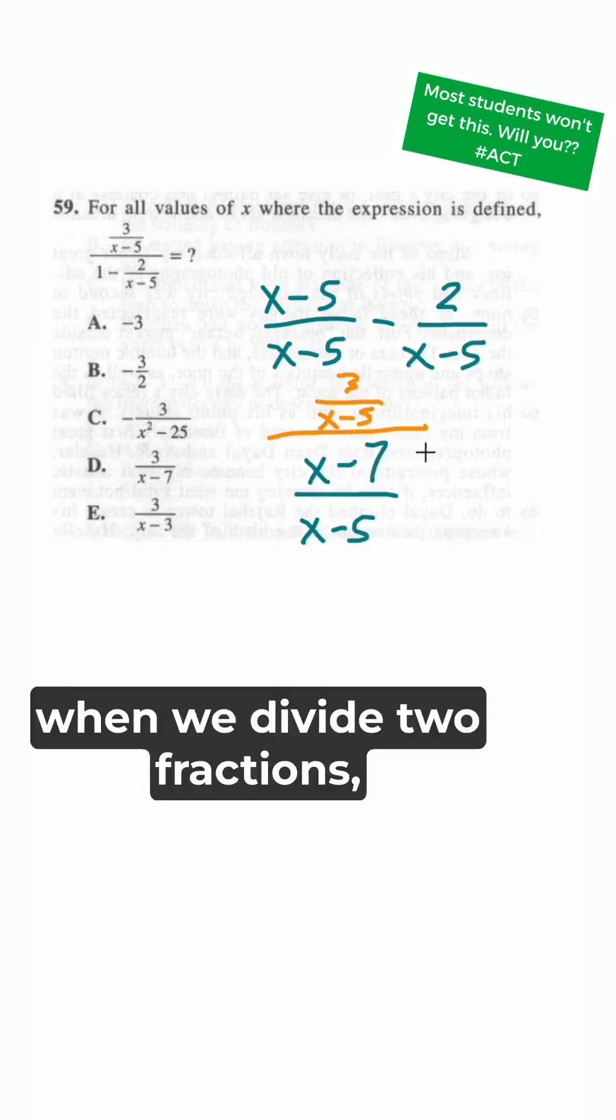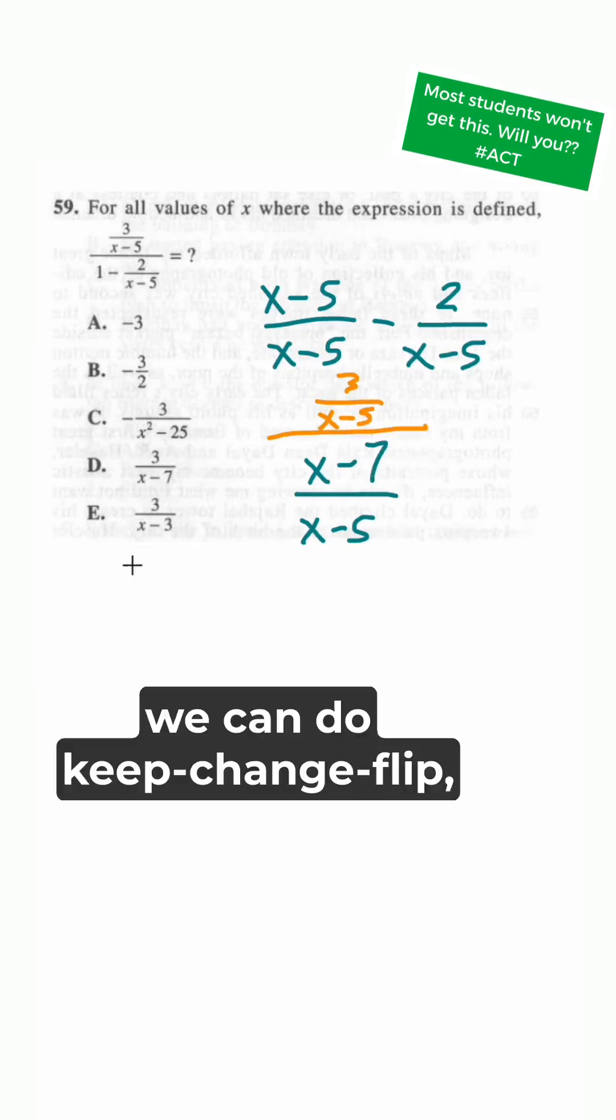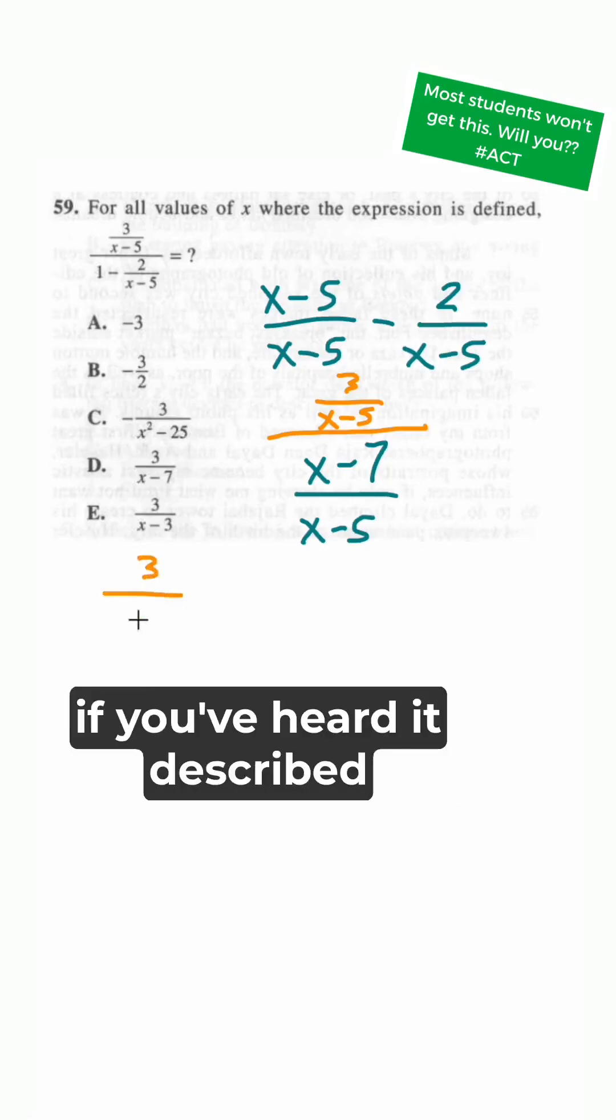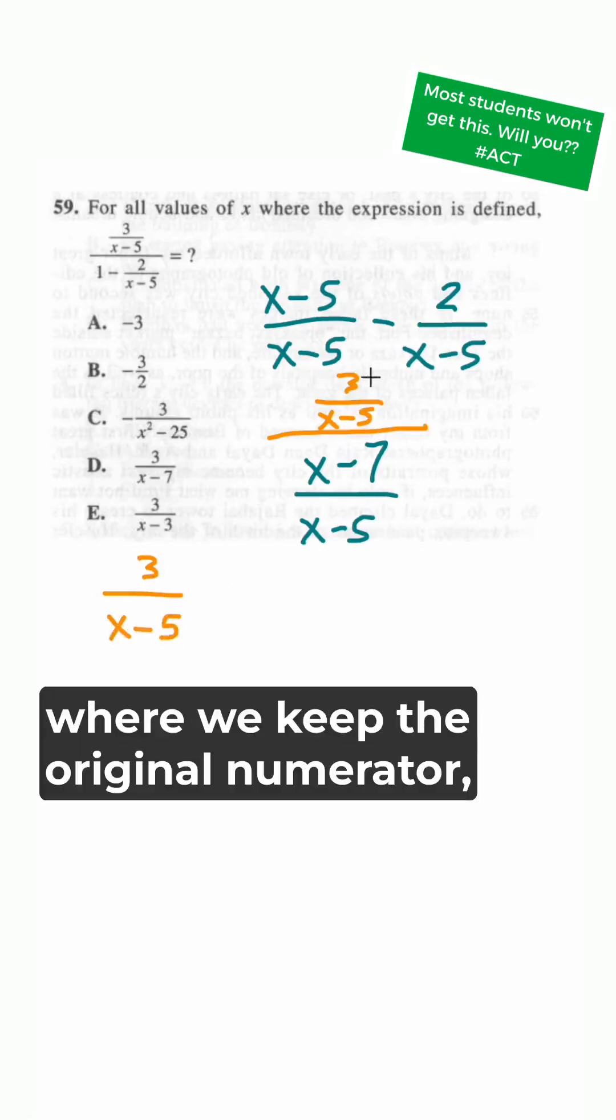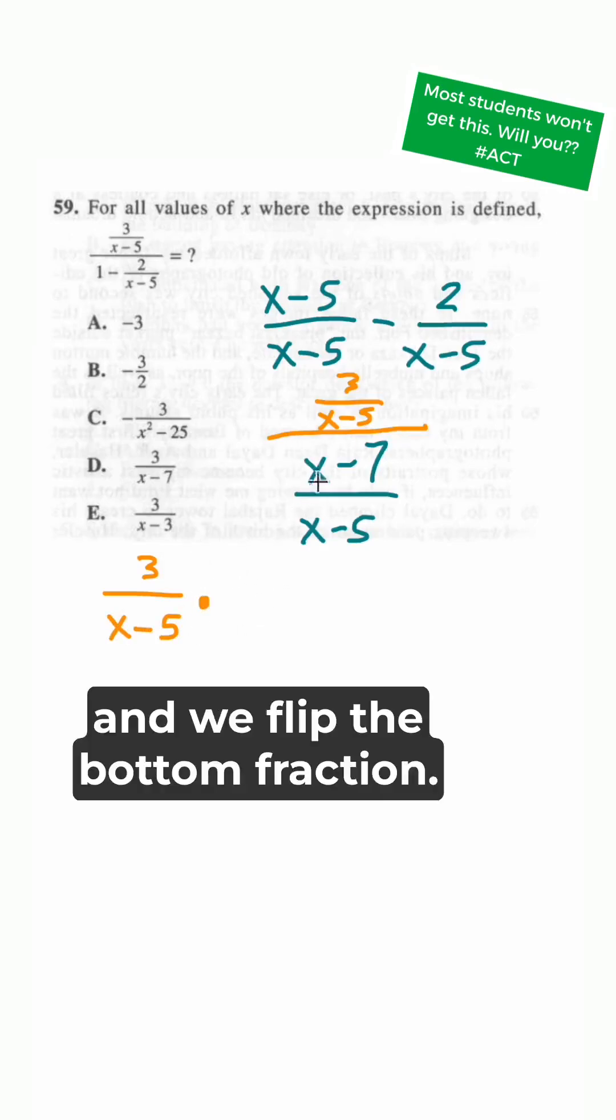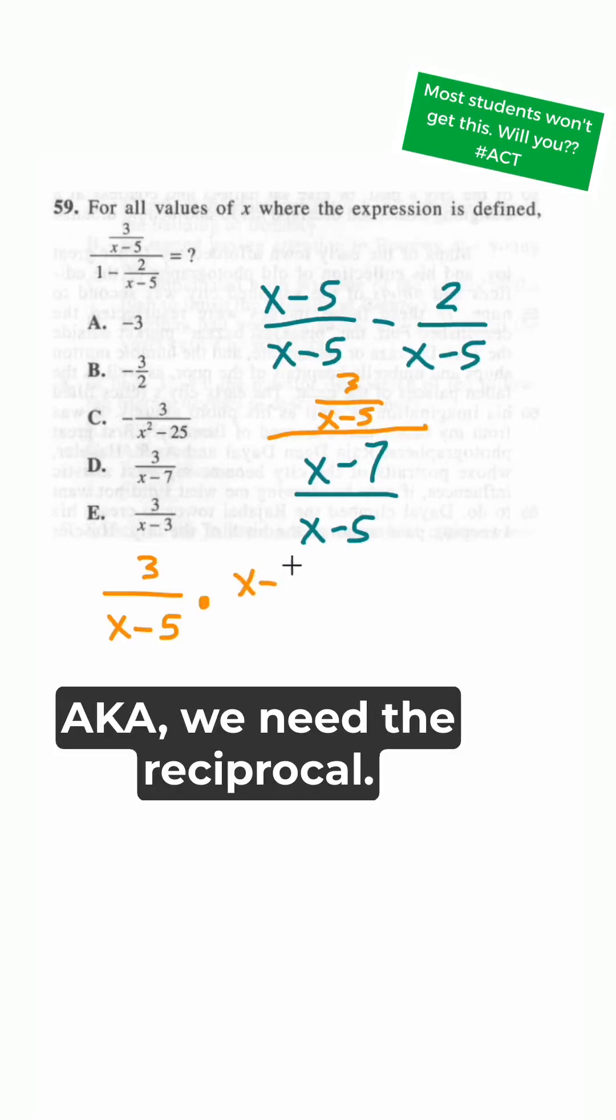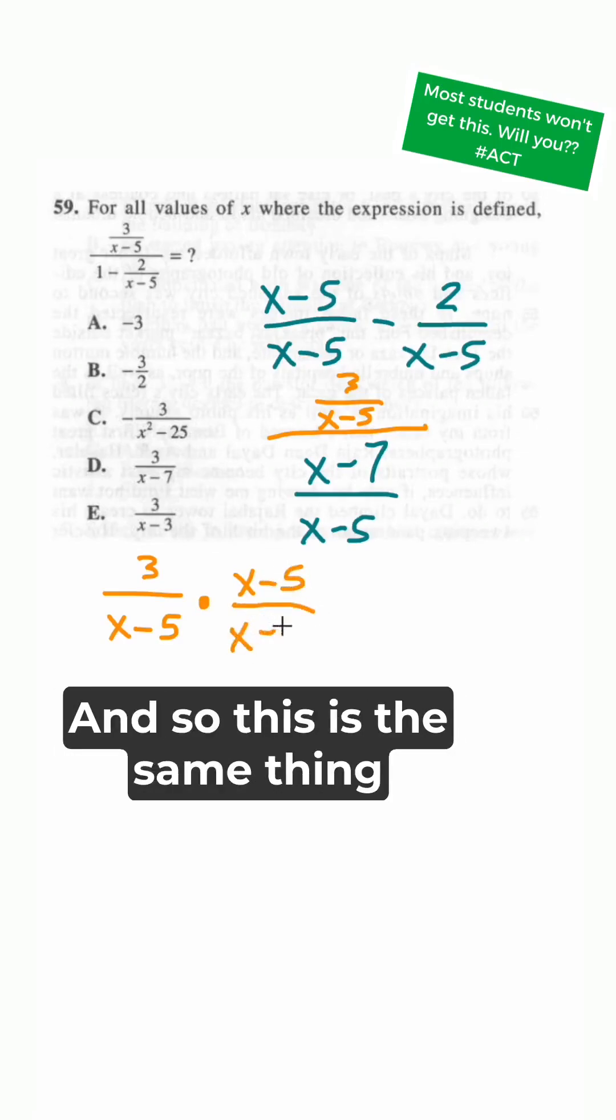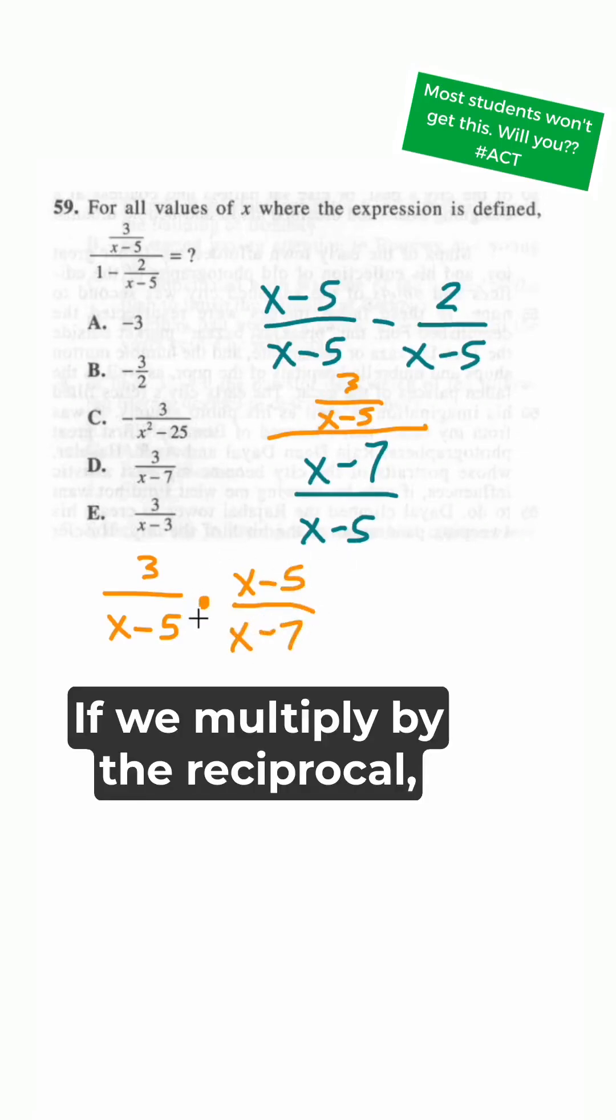Now we've just got this division problem. Remember when we divide two fractions we can do keep change flip. We keep the original numerator, we change the division to multiplication, and we flip the bottom fraction. We need the reciprocal, and so this is the same thing as dividing by that fraction if we multiply by the reciprocal.